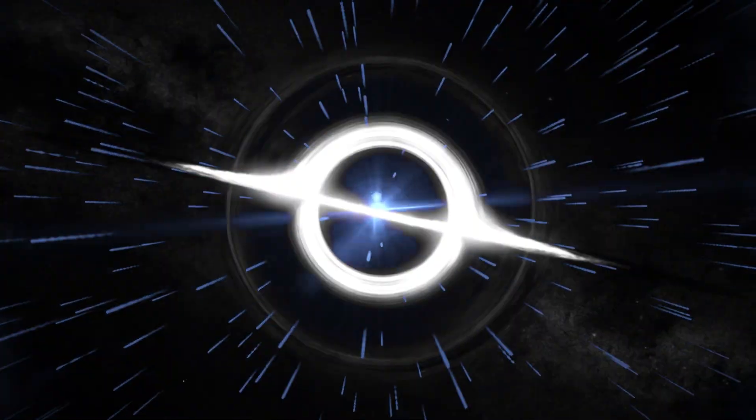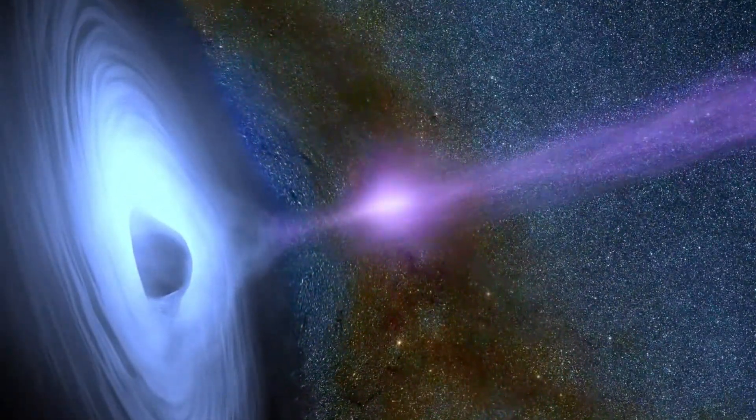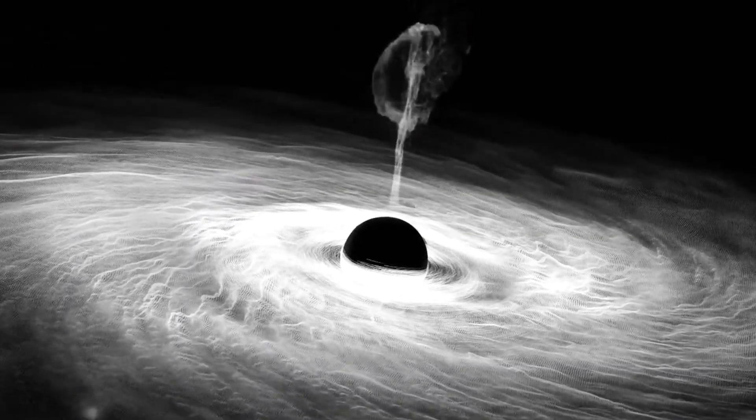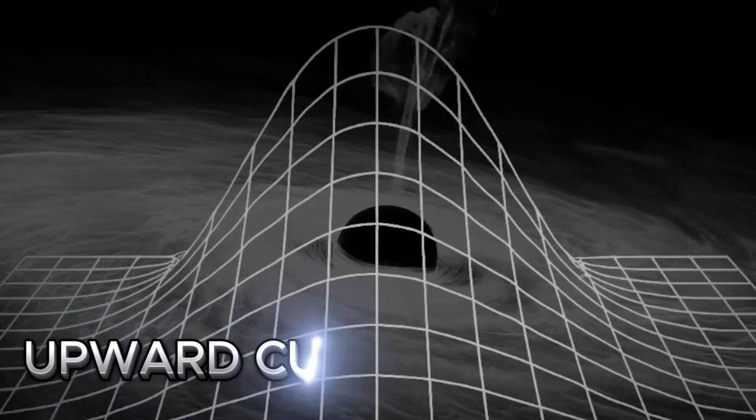There is no clear evidence that white holes exist, but the interesting thing is physics sometimes demands them. If black holes exist as solutions in Einstein's equations, then their mirror images, white holes, must also exist mathematically.